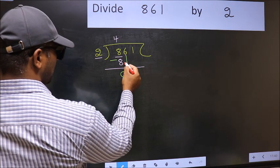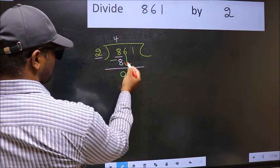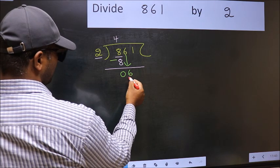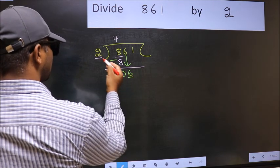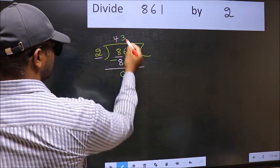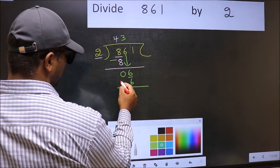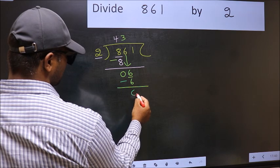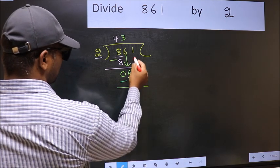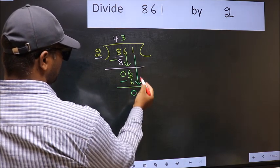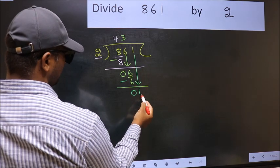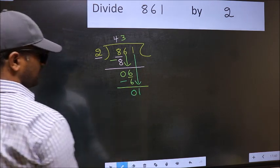After this, you should bring down the beside number. 6 down. Now, 6. When do we get 6 in 2 table? 2 threes, 6. Now you should subtract. 6 minus 6, 0. After this, you should bring down the beside number. So, 1 down.